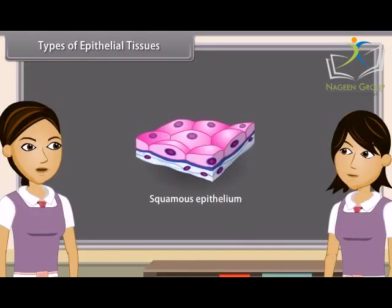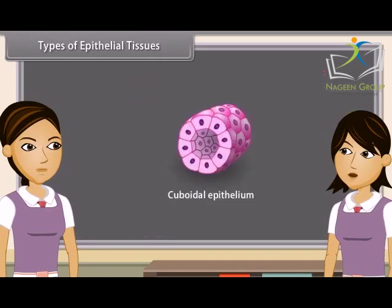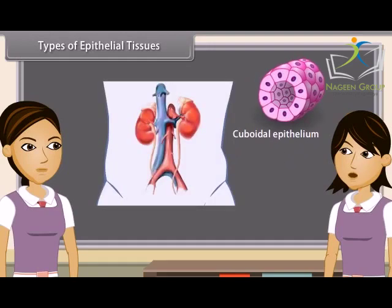Squamous Epithelium is made up of thin, flat, irregular shaped cells which fit together like tiles to form a compact tissue. It is found in lining of cavities and blood vessels and covering of tongue and skin. It is also known as pavement epithelium. In cuboidal epithelium, cells are cube-like; they appear square in section but hexagonal on free surface. It is found in kidney tubules, thyroid vesicles, salivary, sweat and exocrine glands.